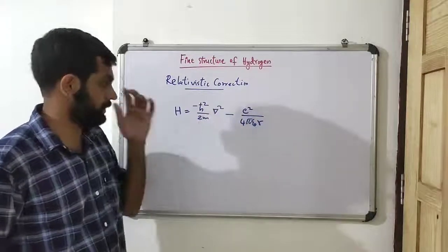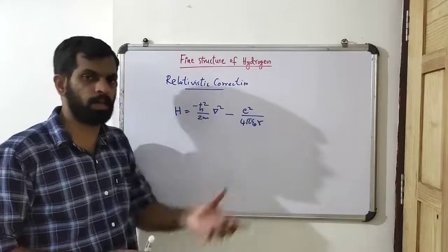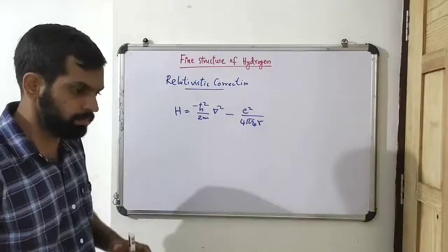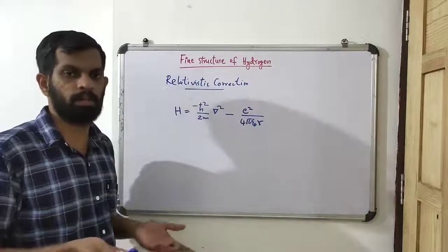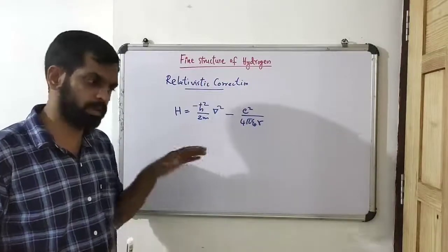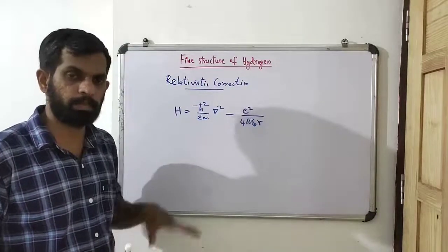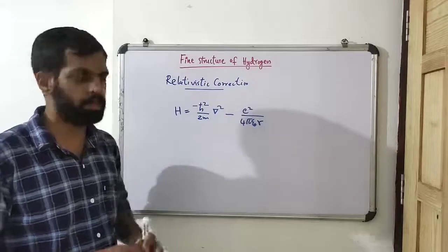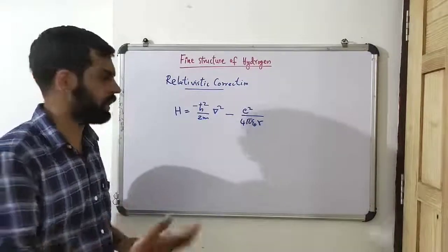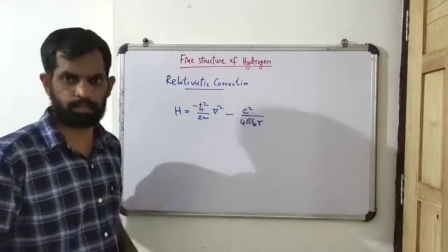So what happens to this Hamiltonian when we take the relativistic correction? We are going to calculate that in this lecture.